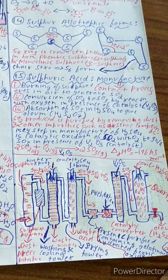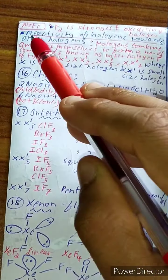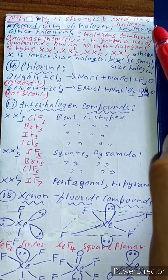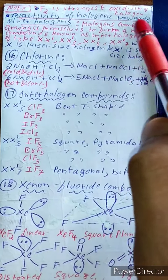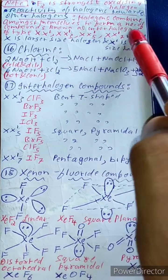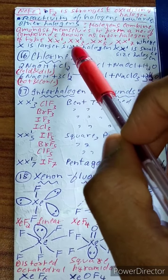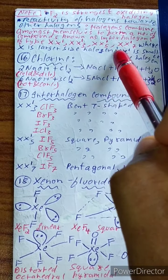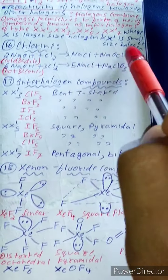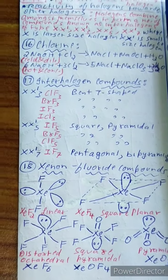Note: F₂ is the strongest oxidizing halogen. Halogens combine among themselves to form interhalogen compounds of the types XX′, XX′₃, XX′₅, and XX′₇, where X is the larger halogen and X′ is the smaller halogen.